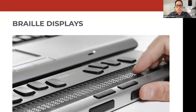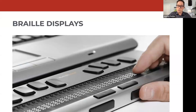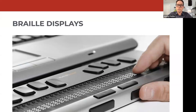Another way of reading information from a screen is a refreshable braille display — an accessory that attaches to a laptop alongside the keyboard. It has a row of braille dots that raise and lower, providing a changeable line of braille text someone can read by touch. Users who are deafblind — who can't see or hear — would use a braille display instead of listening to the screen reader audio, using their sense of touch to experience the information.